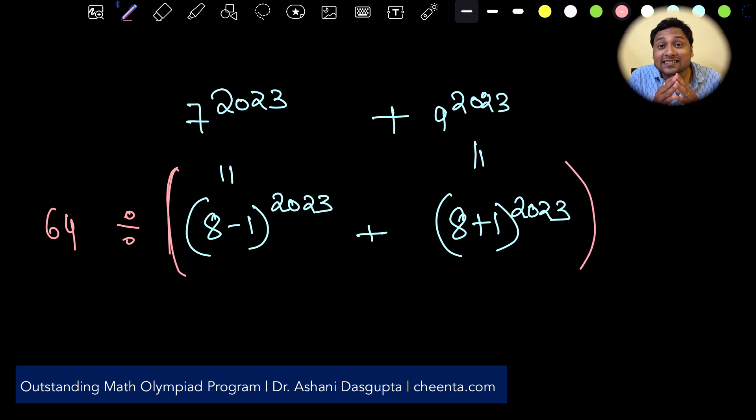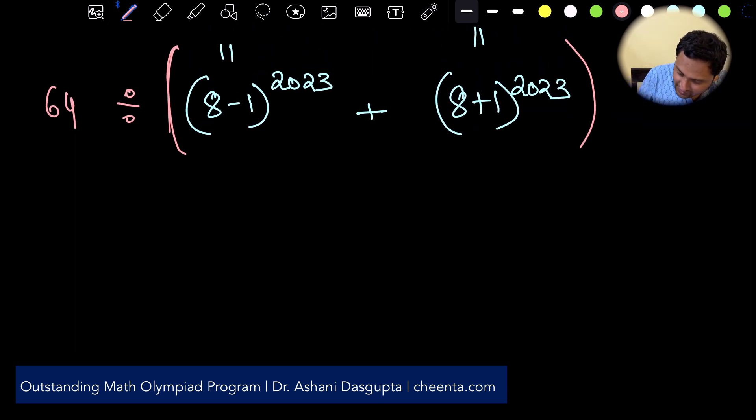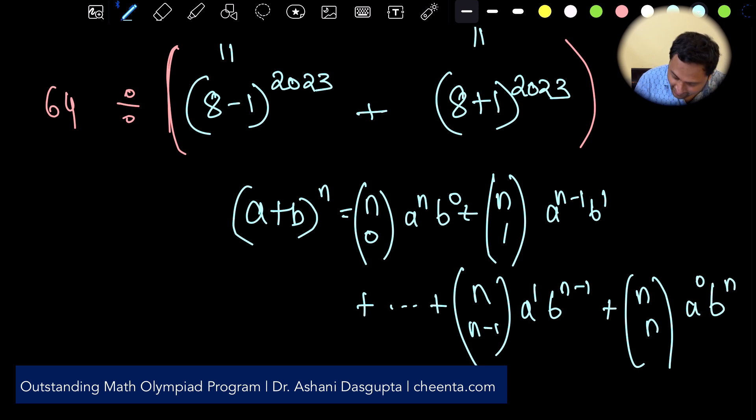So how do we do it? Well we expand this binomially. If you don't know binomial theorem it's a quick review. If you have a plus b raised to the power n, this is n choose 0 a to the power n b to the power 0 plus n choose 1 a to the power n minus 1 b to the power 1 and so on up to n choose n a to the power 0 b to the power n. That's the binomial expansion of a plus b to the power n and we will be using this technique to solve this problem.